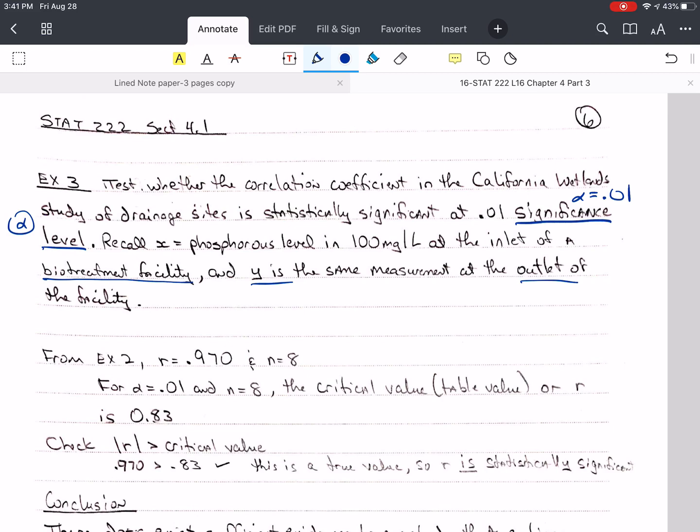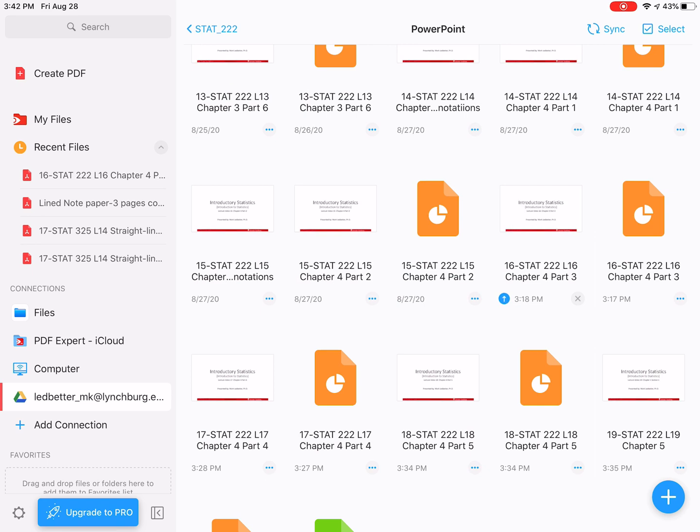And this was from example two. And so recall that our correlation coefficient was 0.970, and we had eight pairs of data. So eight measurements, the X from the inlet, the Y from the outlet. We're going to let alpha equal 0.01, and of course, N is 8, and we need to find the critical value in the table.